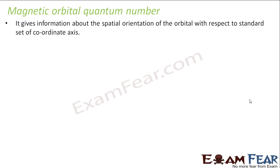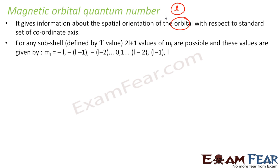The magnetic orbital quantum number gives information about the orientation of the orbital. Till now we have seen L — the azimuthal quantum number — which gives the shape of the orbital, whether it is S shape, P shape, or D shape. So the magnetic quantum number gives the orientation of the orbital with respect to the coordinate axis. For a given subshell or value of L, I can have 2L plus 1 values of M.